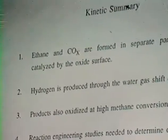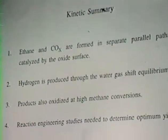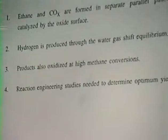So this summarizes the kinetic results. Ethane and COX are formed in separate parallel pathways catalyzed by the oxide surface. Hydrogen is produced at water-gas shift equilibrium. Products are also catalyzed at high methane conversion, and we believe at this point that reaction engineering studies are needed to determine what the optimum yield over these catalysts would be. Thank you.